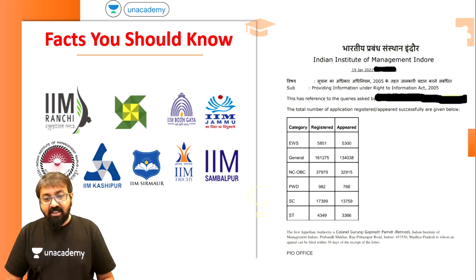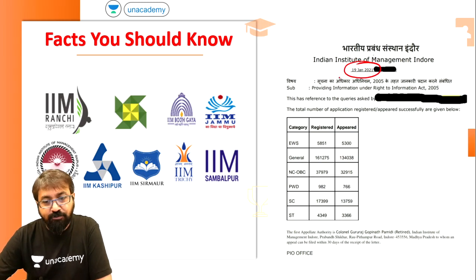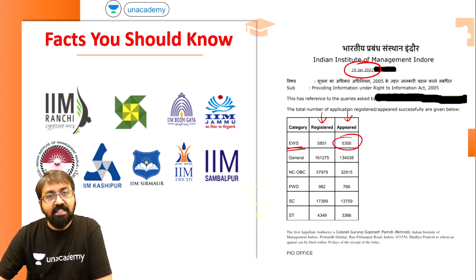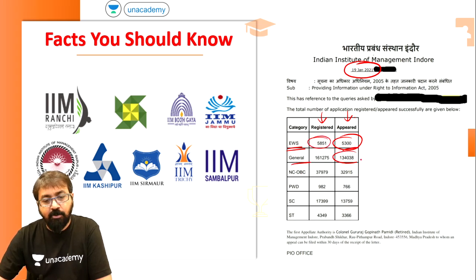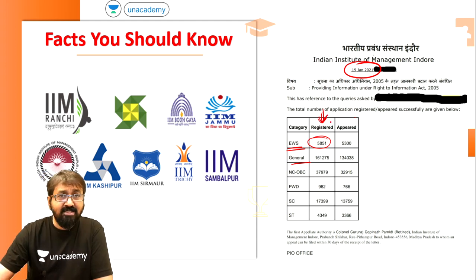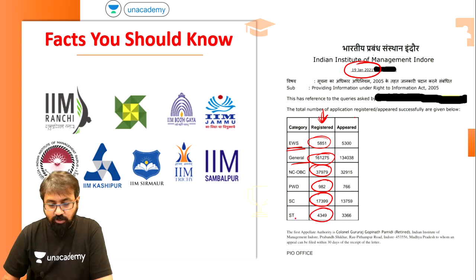Here is the copy of the RTI that we recently received, dated 19th January 2021. We have got the number of students who registered and who appeared. In the EWS category, about 5,300 students appeared. In the general category, about 1,35,000 students appeared. Looking at NC-OBC and all other categories, I am looking at the number of applicants — that is the number of students registered — and based on that I have come up with certain statistics that I'm going to share.